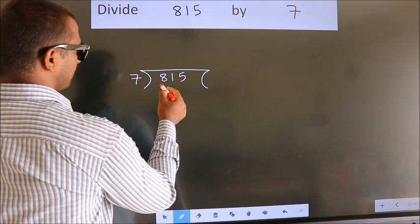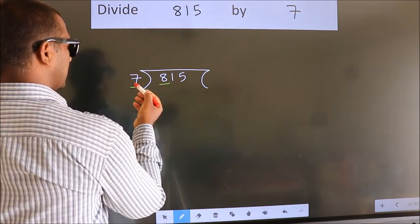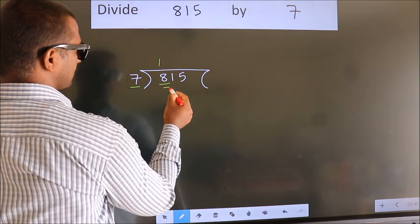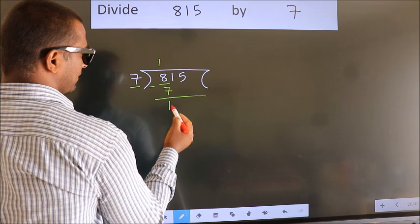Here we have 8, here 7. A number close to 8 in 7 table is 7 once 7. Now we should subtract. We get 1.